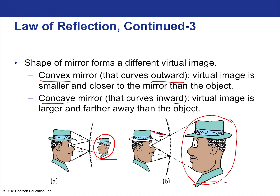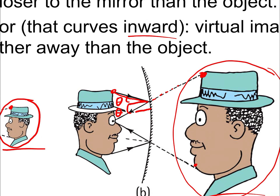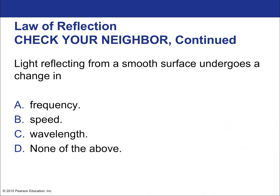We can confirm the size difference by following example rays and applying the law of reflection. Projecting reflected rays back as virtual rays shows the image tip is higher for a concave mirror and lower for a convex mirror. This is because the normal lines differ — for a concave mirror they curve upward, for a convex mirror they curve downward — since the normal is always perpendicular to the local surface.